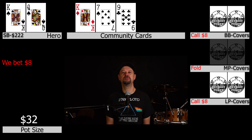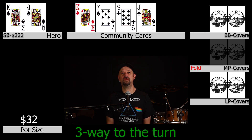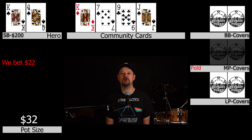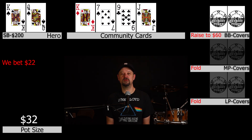We're off to the turn three ways and the turn comes out the jack of spades. We improve to a flush draw and a gutshot straight draw, so we bet $22. Pretty quickly, the big blind announces a raise to $60 and late position folds quickly.